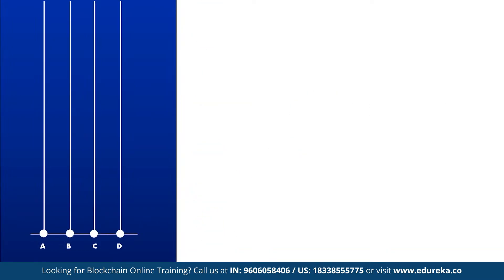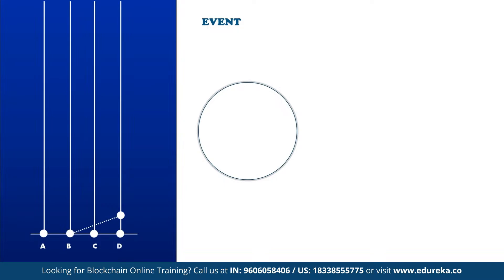Let's take a moment to understand the gossip protocol visually. Bob randomly chose to call Dave, and when they connected over the internet, Bob sent all the events he knew that Dave did not yet know — in this case, just one event, the one that Bob had created at the start. Dave records the fact that this sync happened by creating a new event, which has lines going straight down to his last own event and diagonally down to Bob's last event. Thus the graph of events forms a record of how the members have actually communicated.